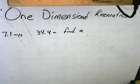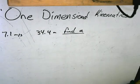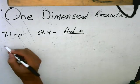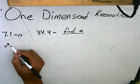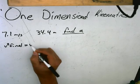We want to find the acceleration, so acceleration equals a. The equation is: v final squared equals v initial squared plus 2aΔt.